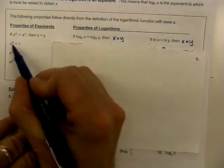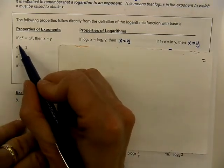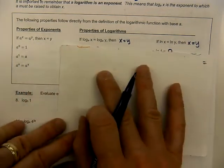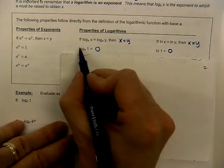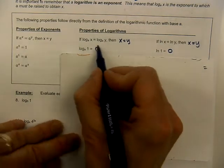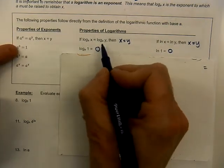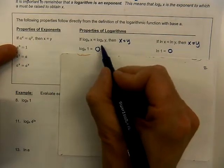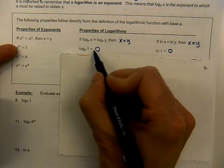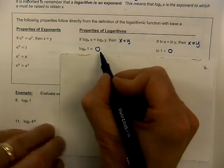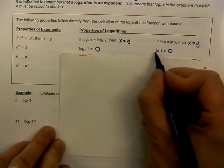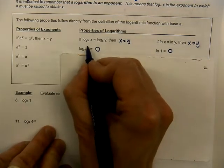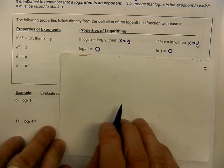You recognize this property: any base to the power of 0 must equal 1. Convert that into logarithmic form and it looks like this: log base a of 1 equals 0. There's your exponent — it's here by itself on the logarithm, not as a superscript. Same with the natural base: natural log of 1 also equals 0. So whenever you see a 1, watch out — something interesting is going on. That's one of our special properties.